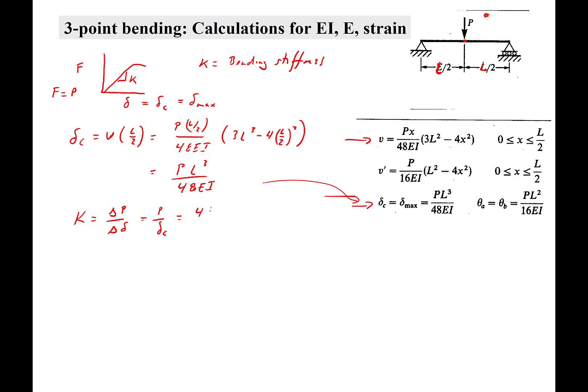If I just rearrange and switch the del C with the P over del C, you get 48EI over L cubed. So all I did was move the displacement to the denominator and put the 48EI over L cubed on the other side. So that, again, is the bending stiffness.